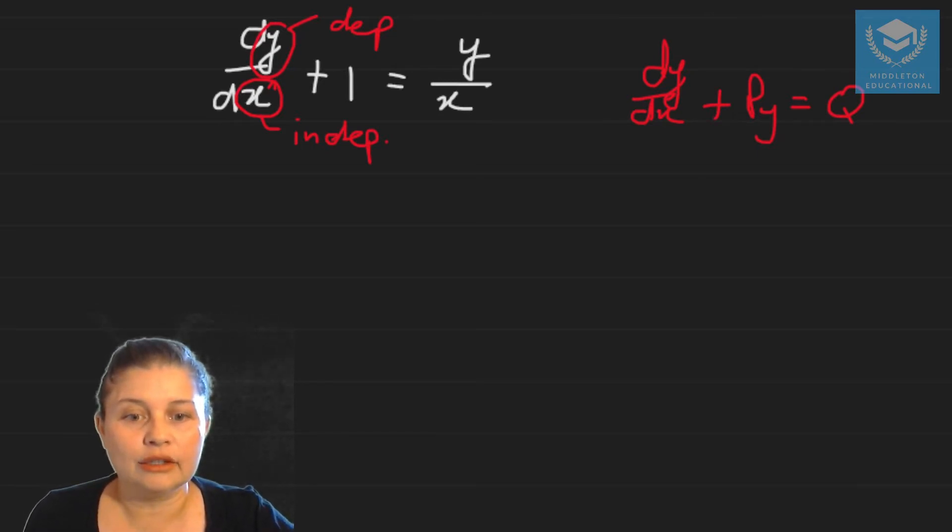So it means that the first term has to be the derivative with nothing in front of it except the one. And we've already got that. So we don't have to divide through by anything.